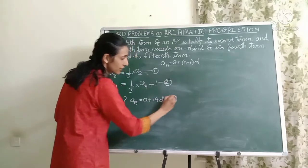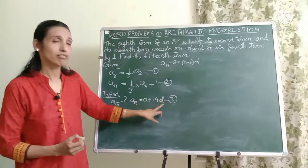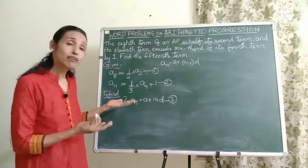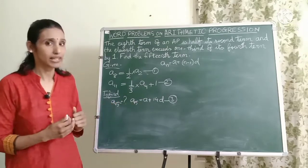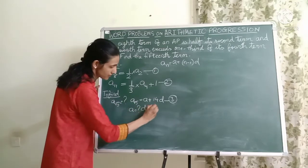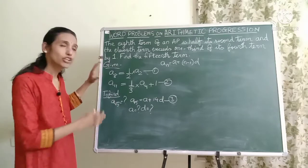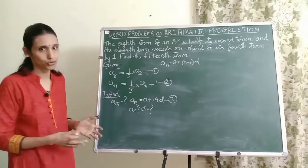Can I call it as a third equation? So if I find the value of A and if I find the value of D, then I have no problem finding the value of A15. This means I now have to find what is A and what is D. Then I can find out A15. So you need to write down what is given and what you have to find.